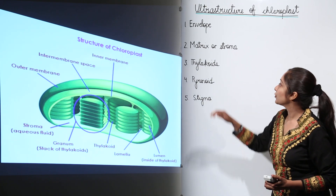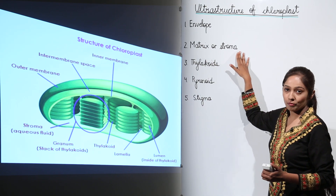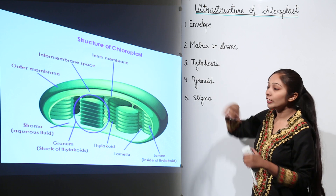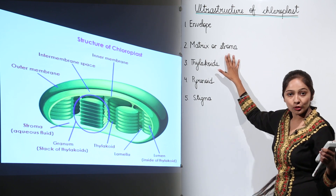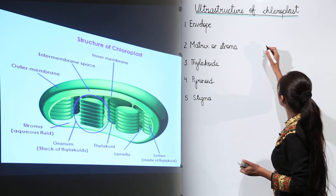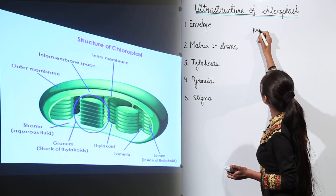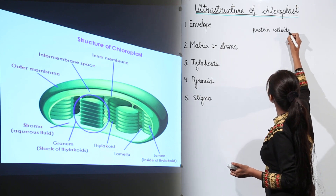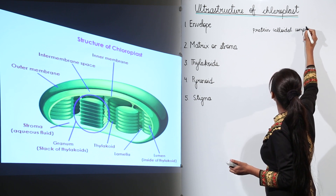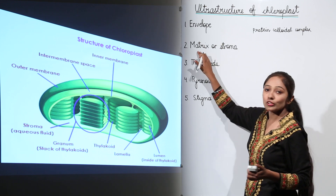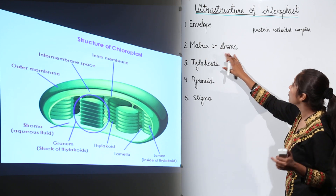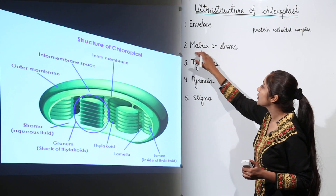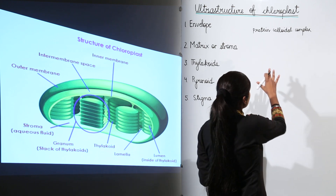Now let us move on to matrix or stroma. Inside this envelope there is an aqueous fluid which is made up of protein colloidal complex. This matrix, which is also known as stroma, is formed of protein colloidal complex. Let us discuss what else this matrix or stroma contains, one by one.